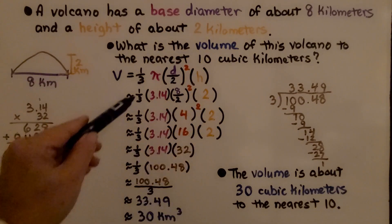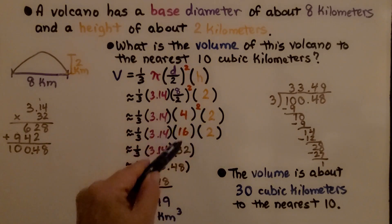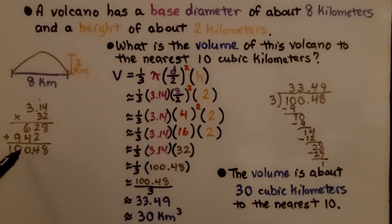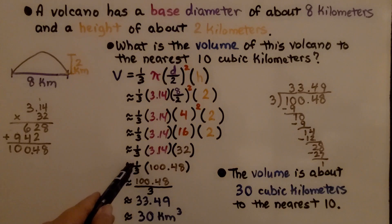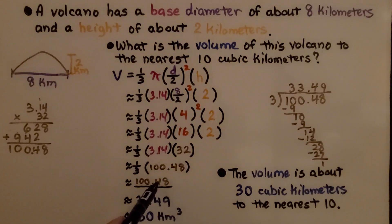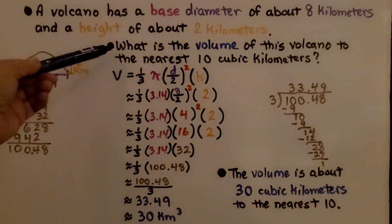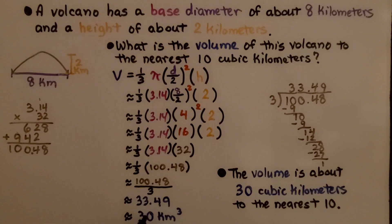We're going to use 3.14. 4 times 4 is 16, so we have 16 times 2, which is 32. We do 32 times 3.14 and get 100.48. Then we multiply that by one-third, or divide it by 3, and we get 33.49 as our volume. It told us to round to the nearest 10 cubic kilometers, which would be 30 kilometers cubed. The volume is about 30 cubic kilometers to the nearest 10.